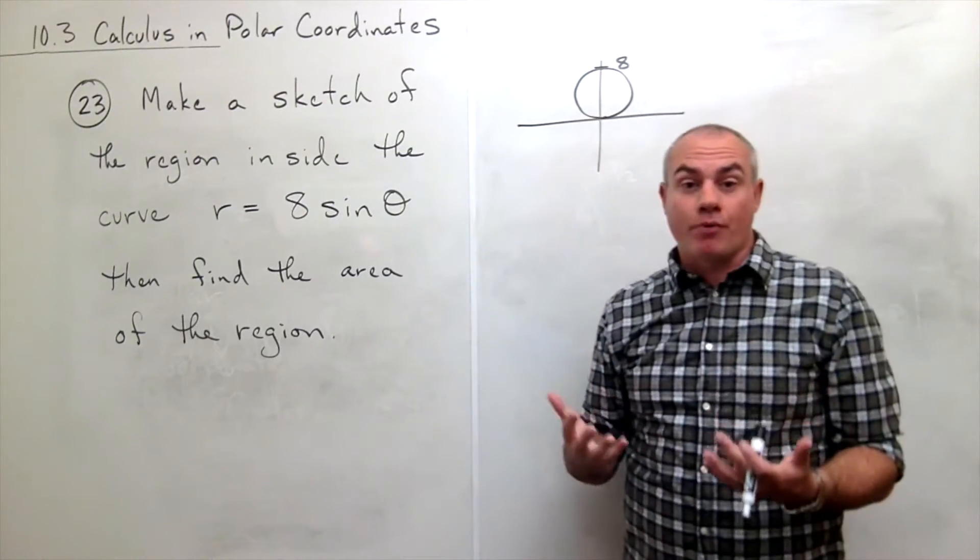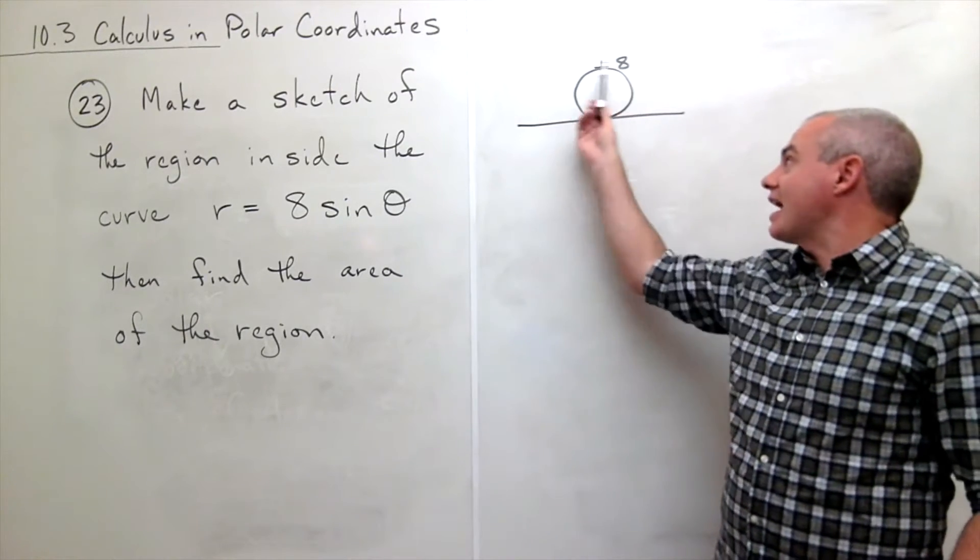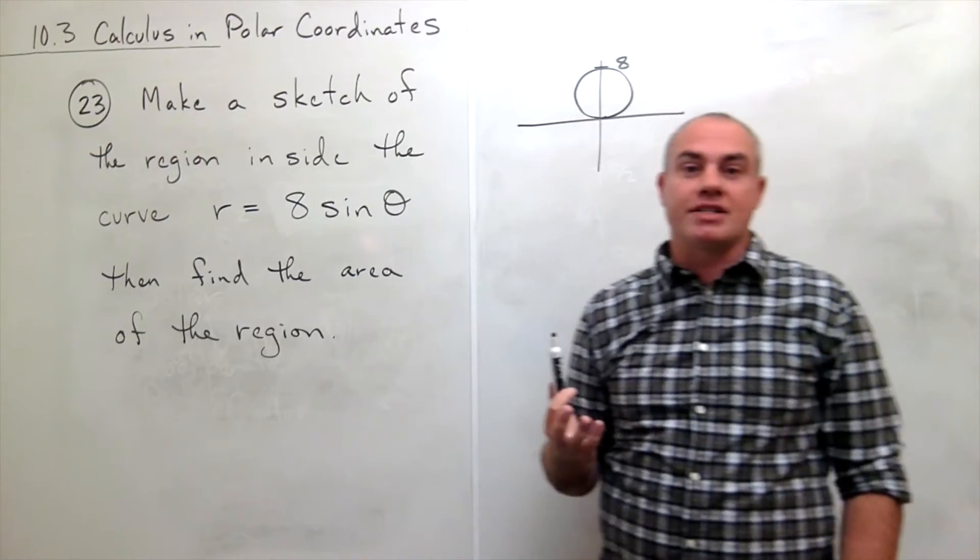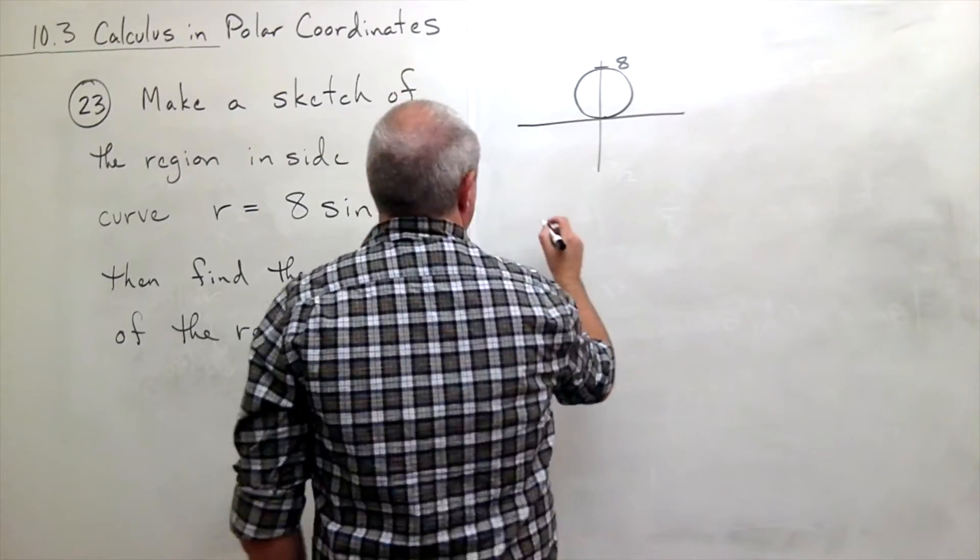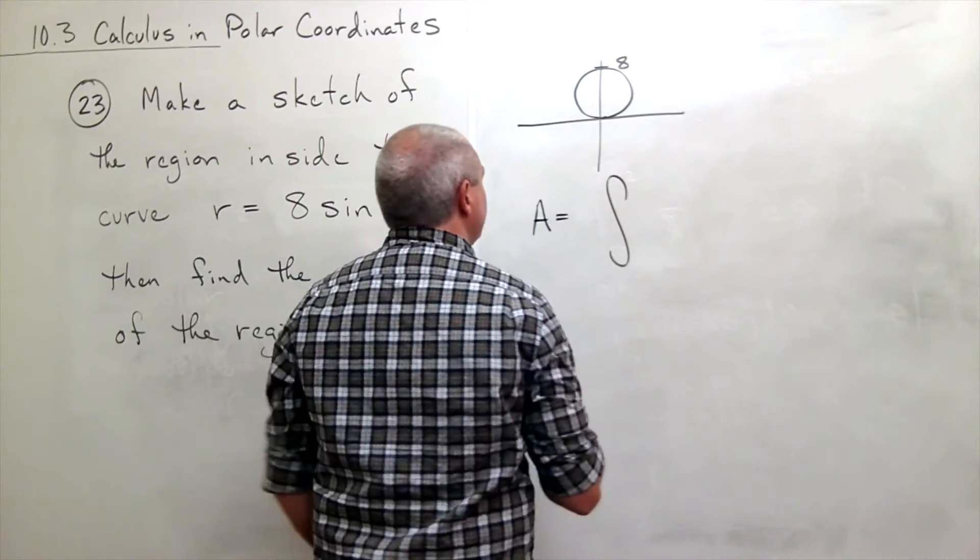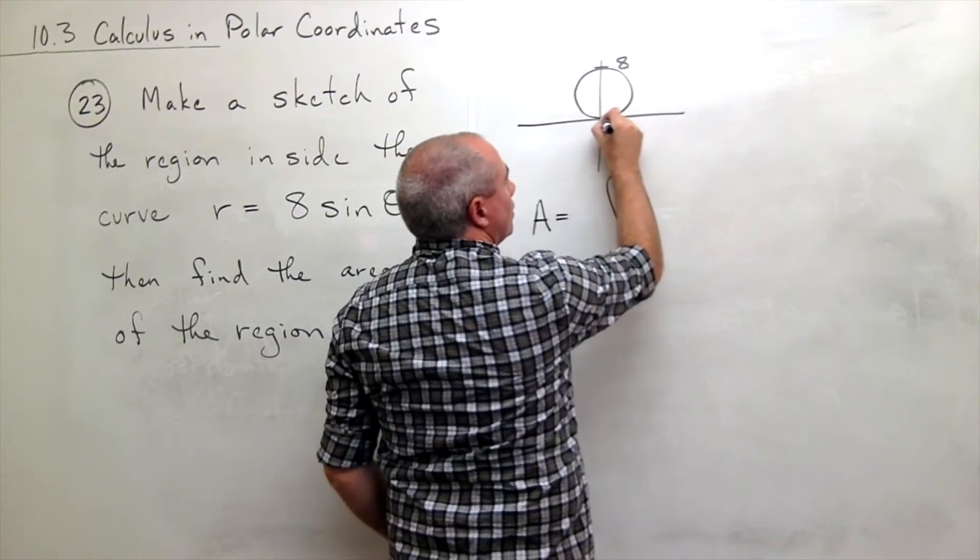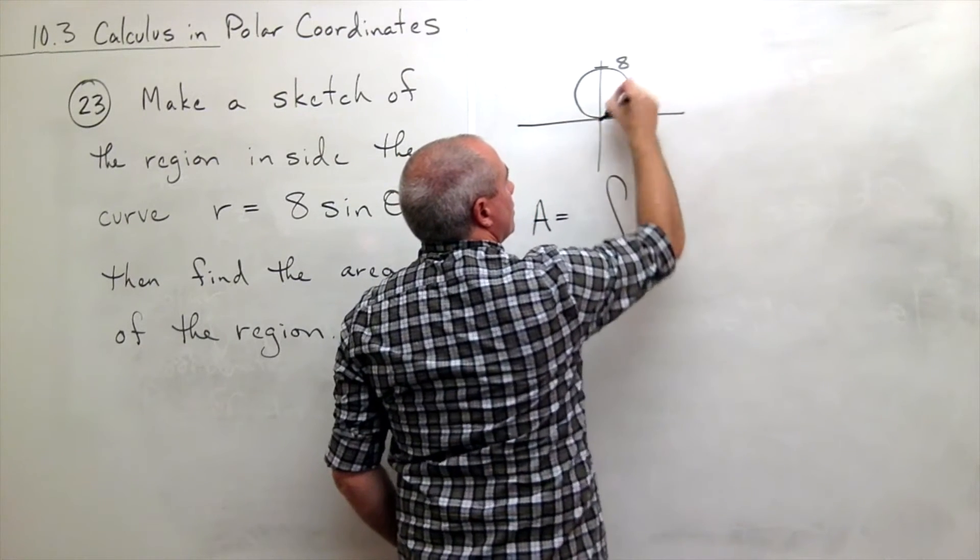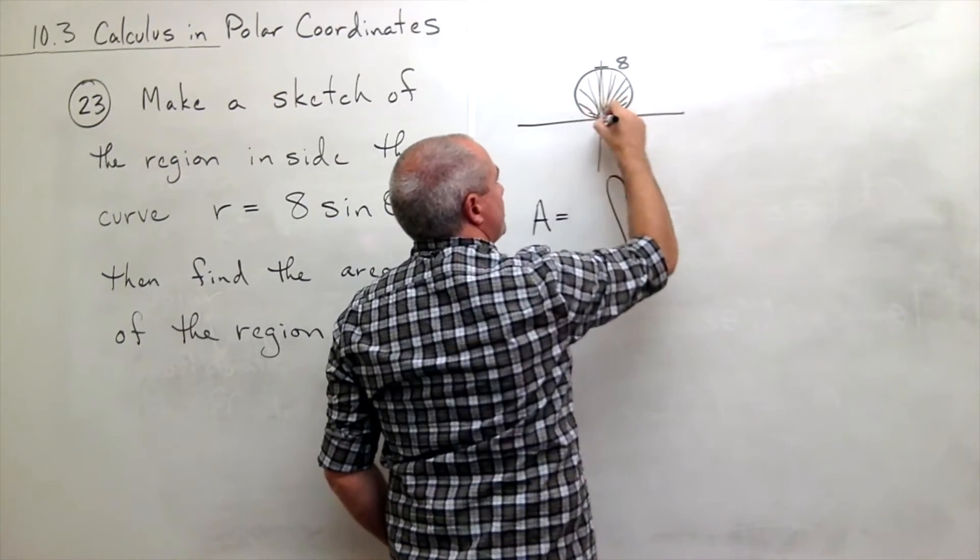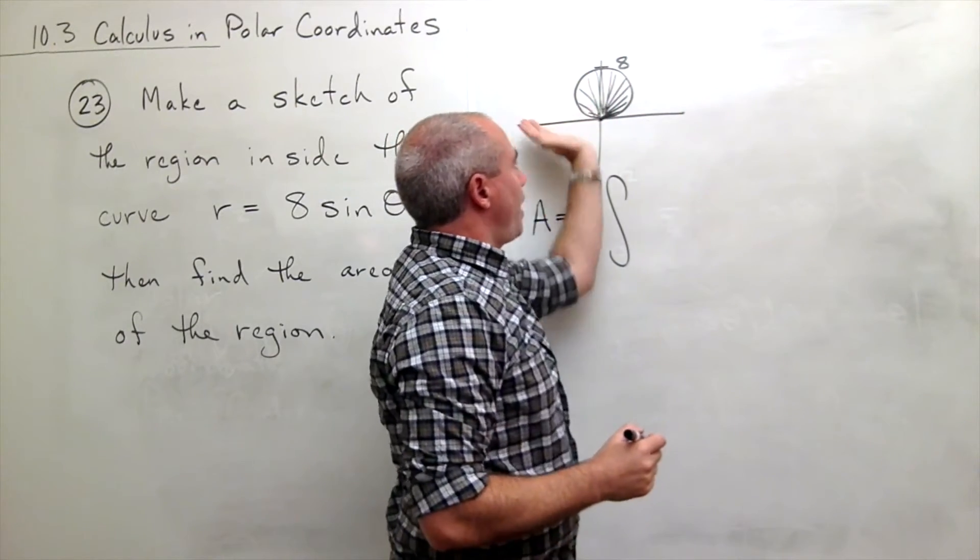But just for good practice, how would I do this using integration if I wasn't exactly sure that that was a circle? So let's go through it and see how we would do it. So the area in this case would be equal to the integral, well this starts at angle 0 and then starts taking area until it gets to pi. So I would integrate this from 0 to pi.